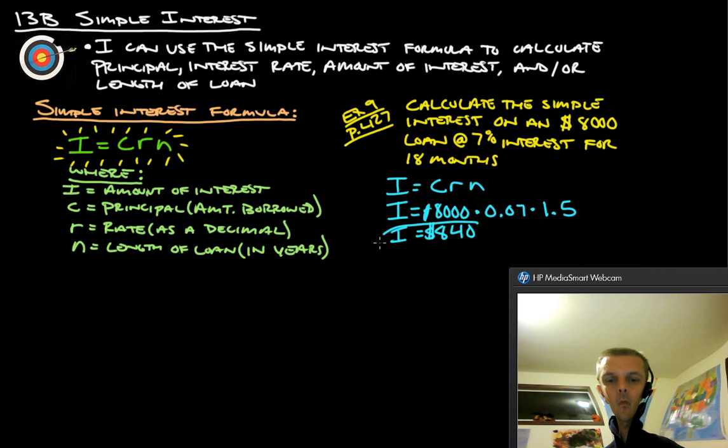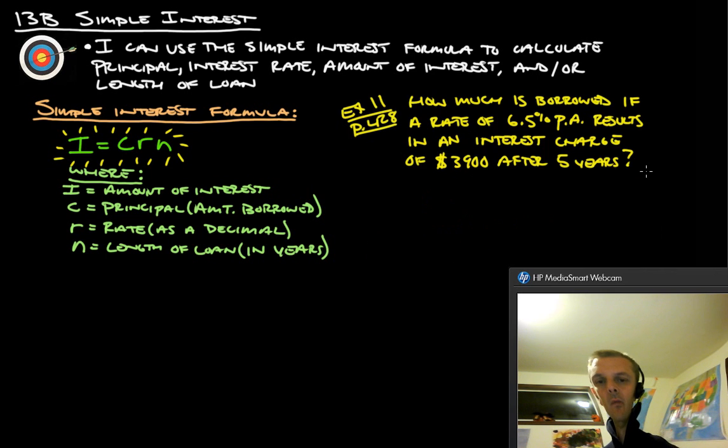Let's take a look at another. So, from page 421, how much is borrowed if a rate of 6.5% per annum results in an interest charge of $3,900 after 5 years? Okay? So, again, we're going to start with I equals CRN. And now we're looking for how much is borrowed. So, we're looking for the C on this one here.